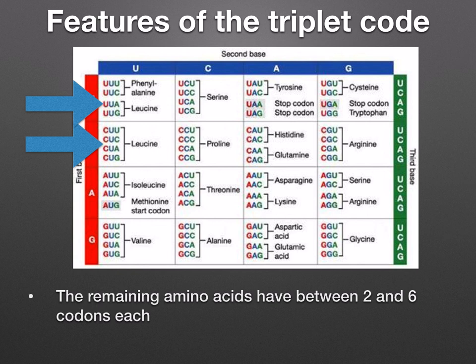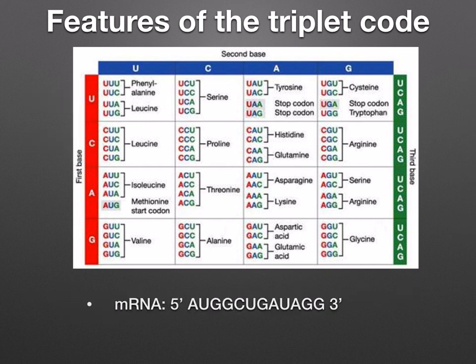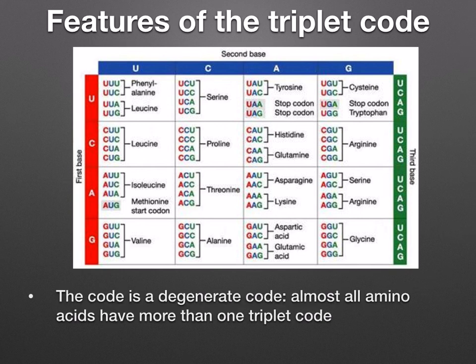Amino acids that don't have just one codon will have two or more codons each. For example, leucine can be coded for by six different codons. The codons are always read in a five prime to three prime direction. We say that the code is degenerate — almost all amino acids have more than one triplet code.